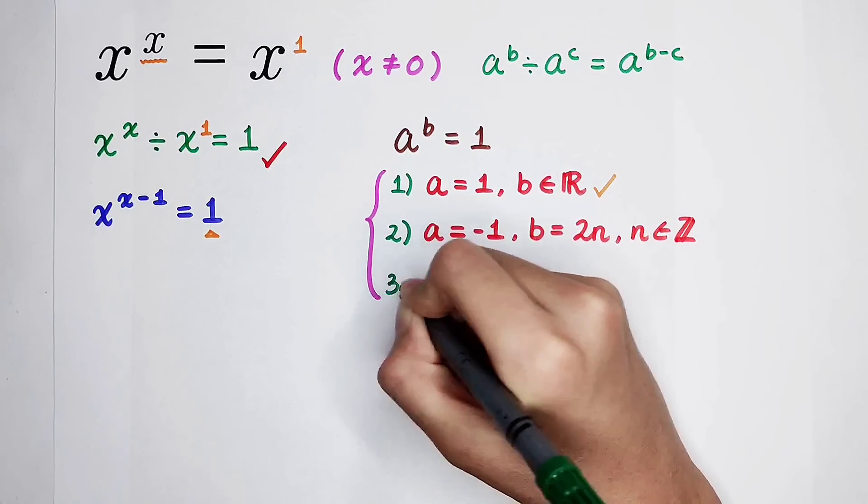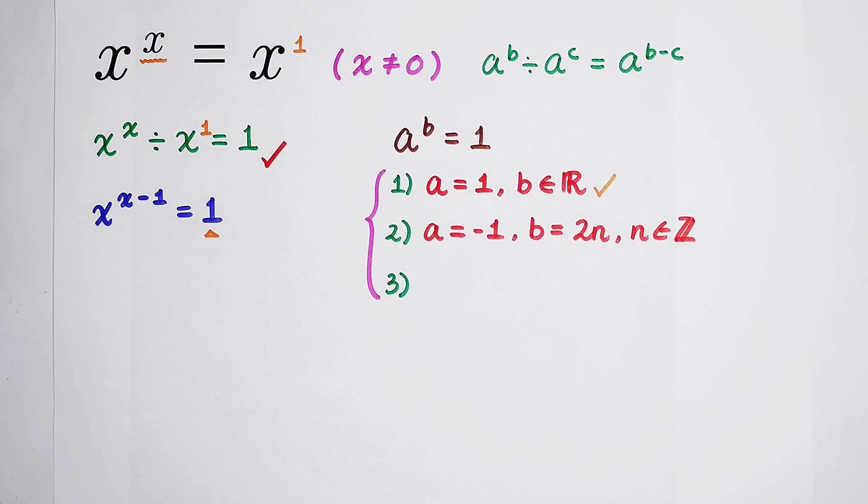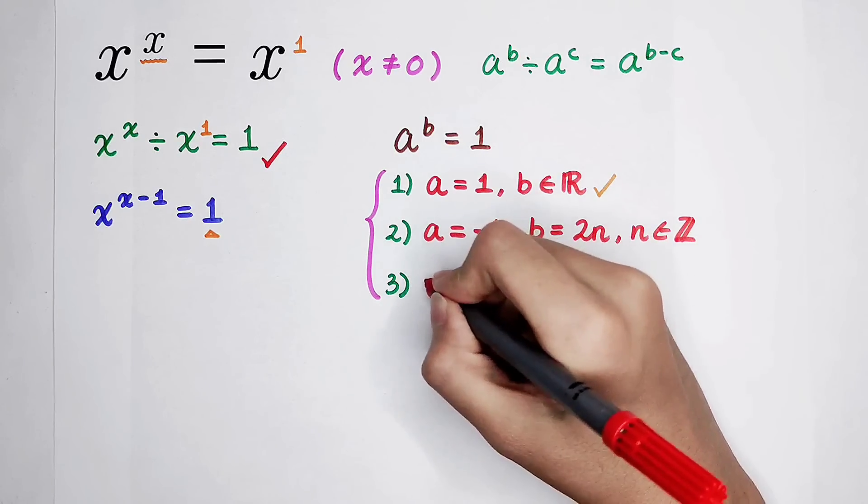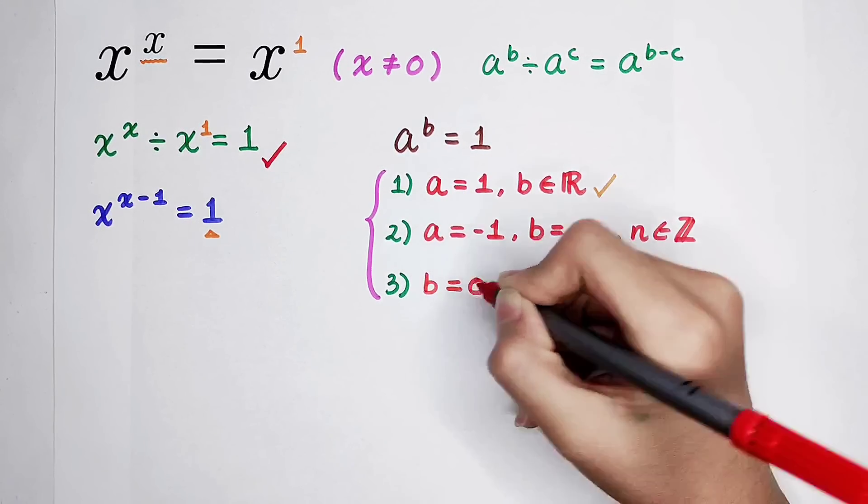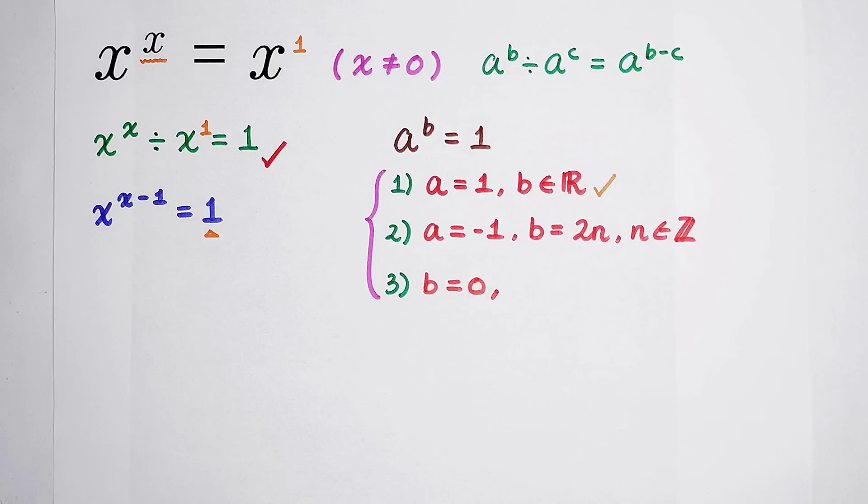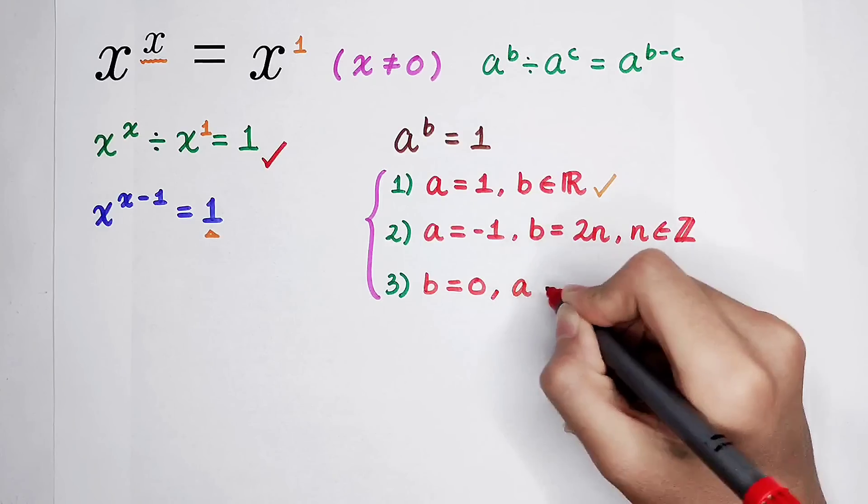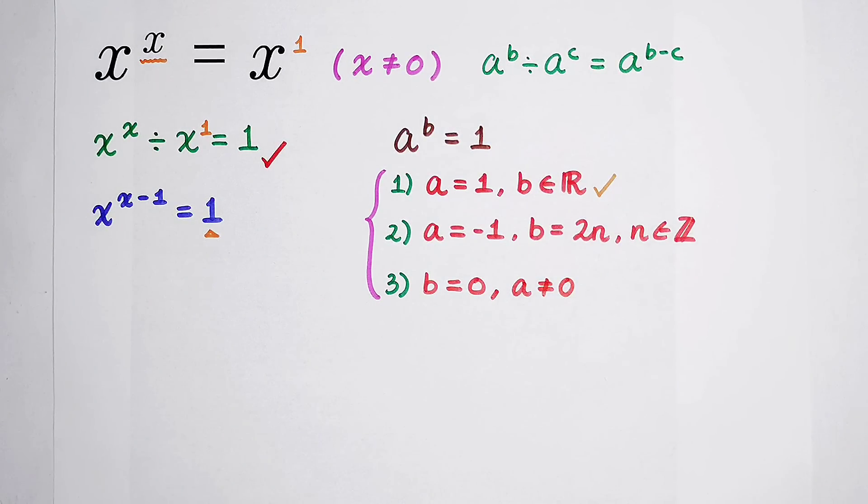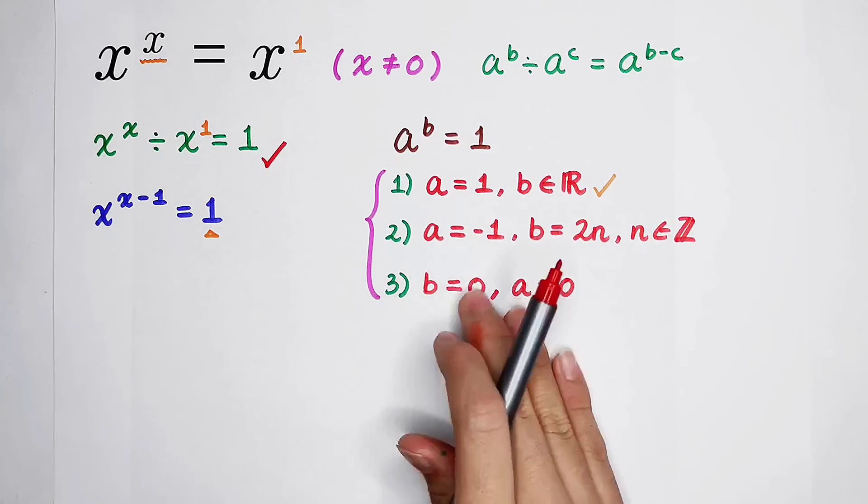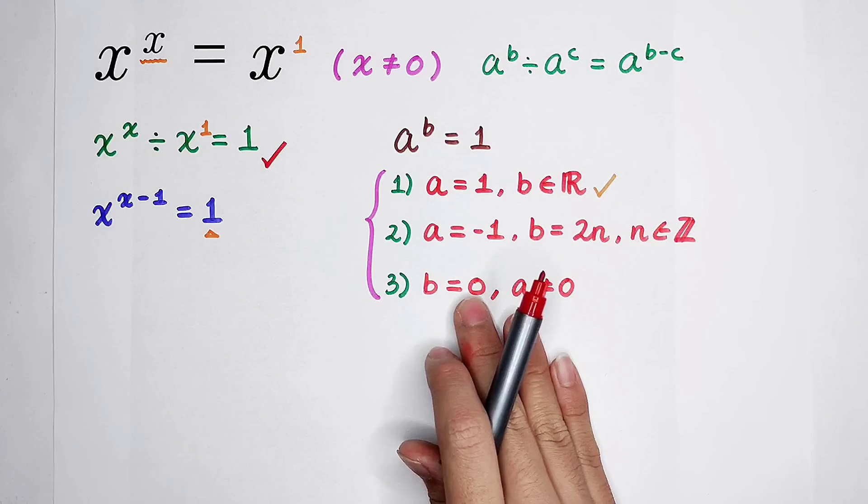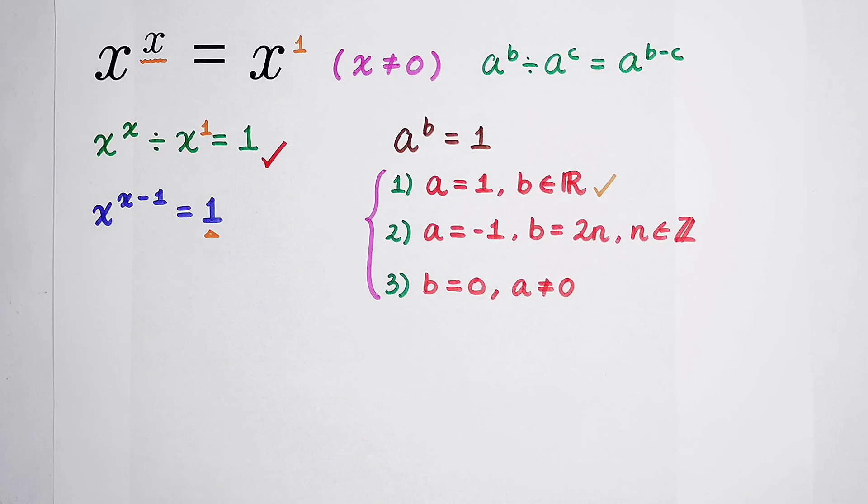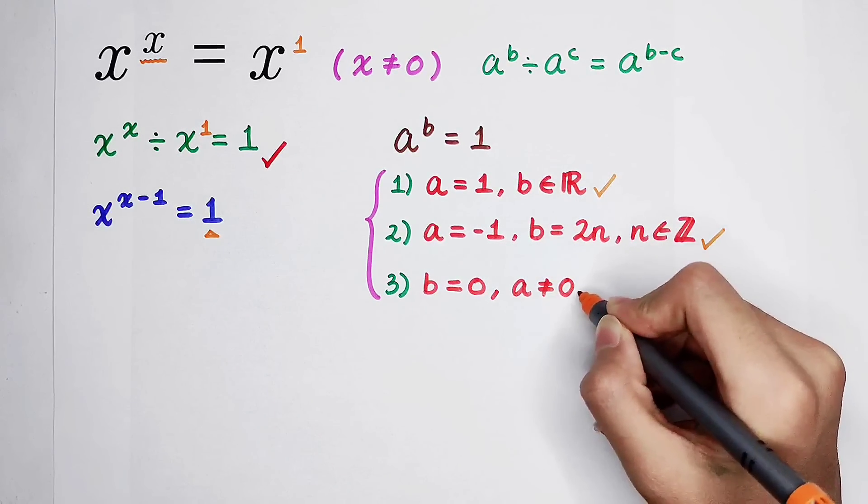For the third case, that is, when b is equal to 0, and what about a? If b is 0, then a cannot be 0. Because when a is 0 and b is also 0, there's no meaning. You can only say that the limit of m to the power of m when m tends to 0 is 1. But when the base and the exponent are both 0, there's no meaning. So there are 3 cases.